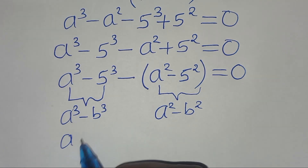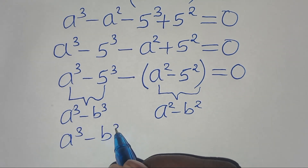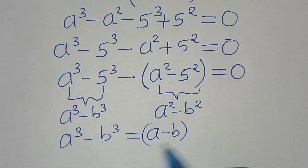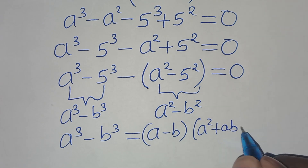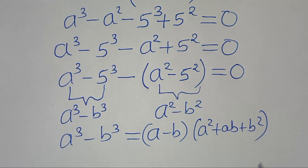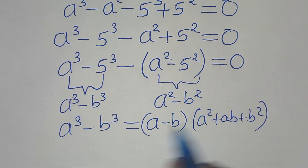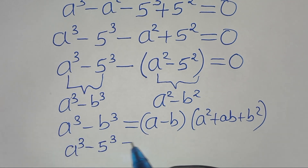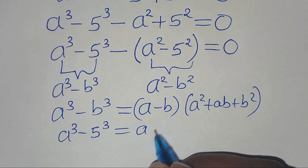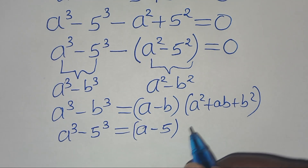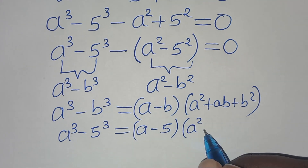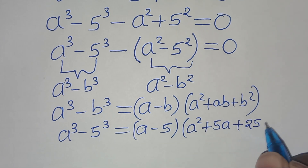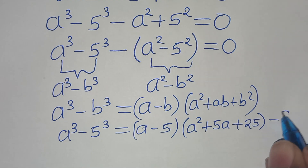From the first part, a to the power of 3 minus b to the power of 3, this can be expressed as a minus b, then a squared plus ab plus b squared. Applying this identity, then we have a to the power of 3 minus 5 to the power of 3, this can be expressed as a minus 5, then a squared plus 5a plus 5 squared, which is 25. Let's call this equation 1.